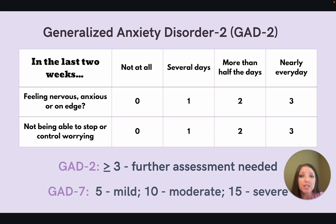What screening tool is commonly used for anxiety screening? We can use the Generalized Anxiety Disorder 2-Item Scale, or the GAD-2, which is a focused assessment including two questions. If the patient has a score of three or greater, this would warrant further assessment.